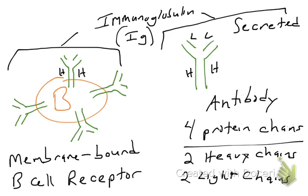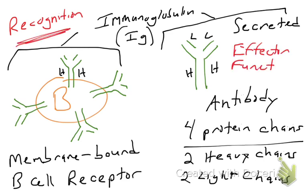The soluble, secreted version of an immunoglobulin is typically referred to as an antibody. The membrane-bound version of an immunoglobulin is typically referred to as a B cell receptor, because this receptor is going to be used by the B cell to recognize an infection. Going back to the themes of the immune system, the immune system has to recognize an infection as something that doesn't belong in the body, and then unleash an effector mechanism to remove the infection or pathogen from the body. When Ig, or immunoglobulin, is in its membrane-bound form, it's part of the B cell receptor, and its main function is to recognize a pathogen.